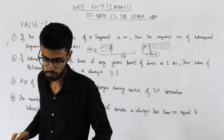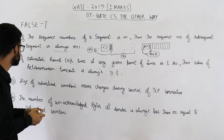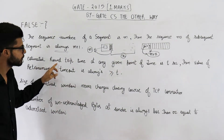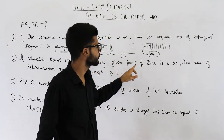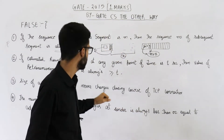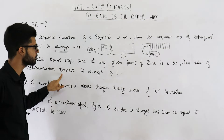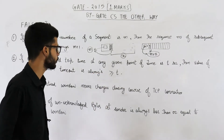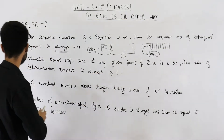Now let us see statement number 2. It says: if the estimated round trip time at any given point of time is t seconds, then the value of retransmission timeout is always greater than or equal to t. This is true.